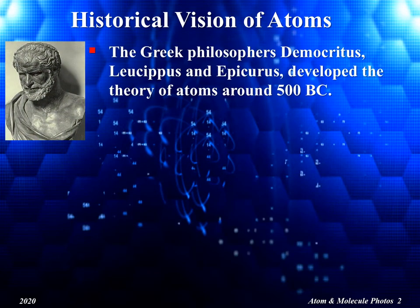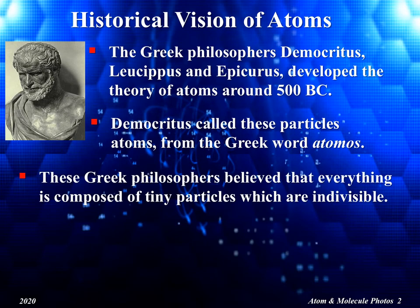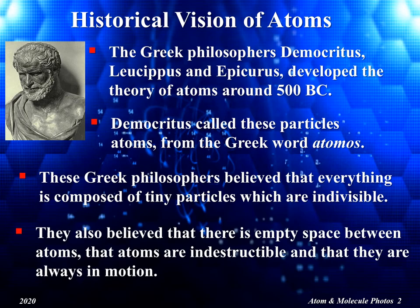The earliest known persons to describe atoms were the Greek philosophers Democritus, Leucippus, and Epicurus at about 500 BC. Democritus called these particles atoms, from the Greek word atomis. These Greek philosophers believed that everything is composed of tiny particles which are indivisible. They also believed that there is empty space between atoms, that atoms are indestructible, and that they are always in motion.